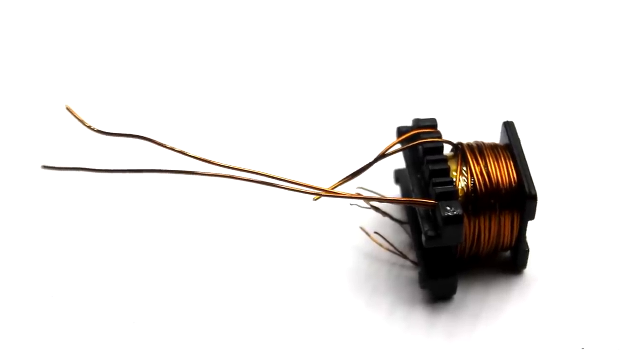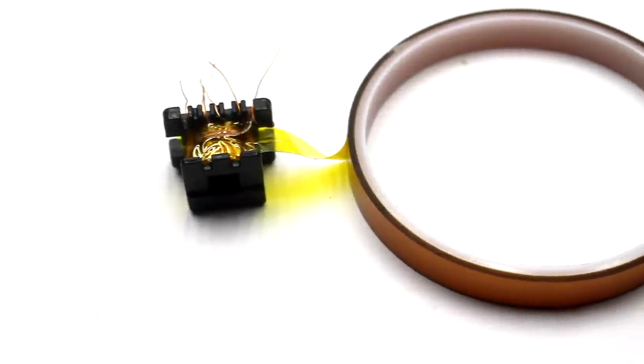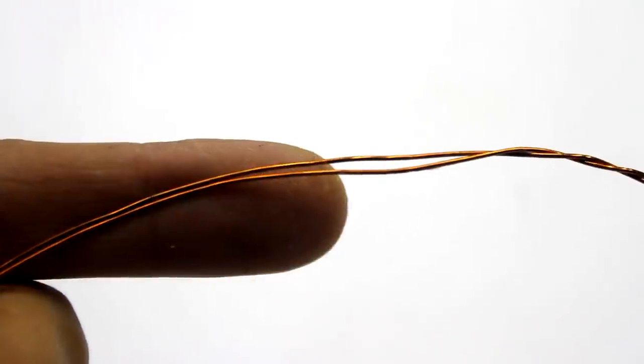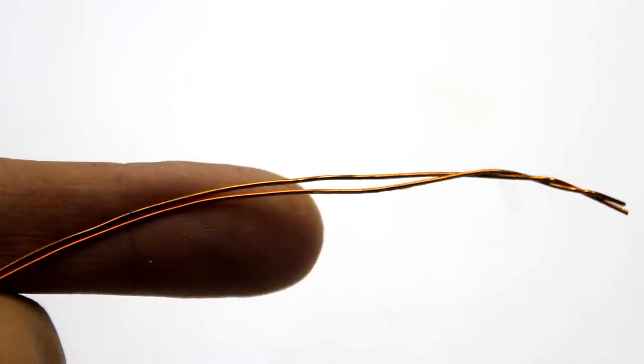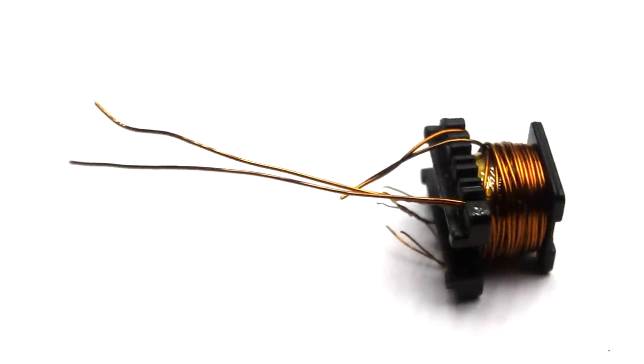After the next layer of insulation, we wind the secondary winding. By the way, I isolate with thermal tape. Secondary winding is calculated at the ratio of 1 turn for 1 volt. In my case, the winding contains 2 shoulders of 12 turns each with a wire of 0.8 mm.